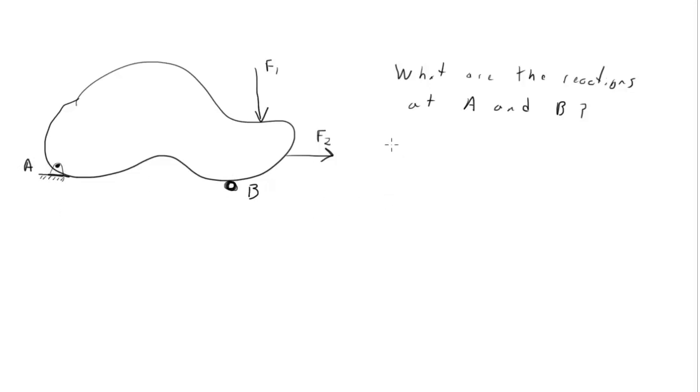Step one is a free body diagram, except now we're not just drawing a point like we did in Chapter 3. We're drawing the entire body. So here's a rough approximation. Here's a rough approximation of that shape, right? And now it's free because I haven't put any of the supports. I go ahead and I draw the forces on it.